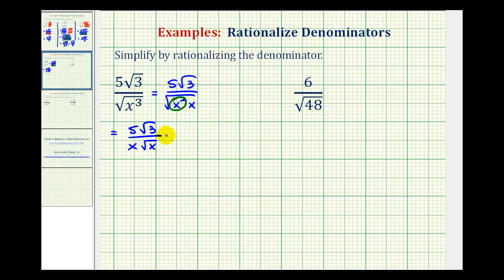So what we'll do here is multiply both the numerator and denominator by the square root of x. Notice how this is like multiplying by one, but now we're going to have the square root of x squared when we find this product. So now we'll go ahead and multiply. The numerator is going to be 5 times the square root of 3 times x, or 3x.